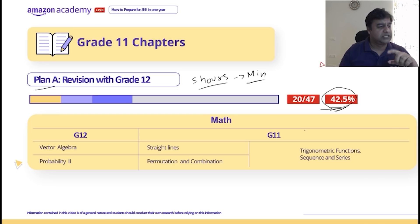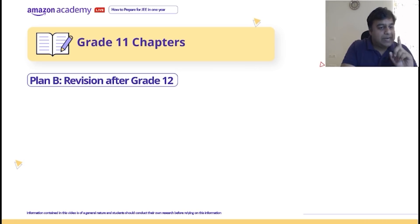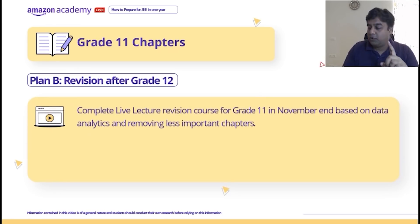You can do lectures, we will deliver whatever. Doubts will be clarified. If you increase the number of hours, you will be able to practice and do the chapter tests also for these chapters so that approximately 42% of the course will be completed. Now this is Plan A.